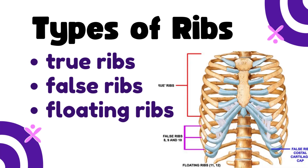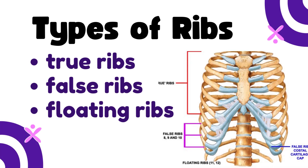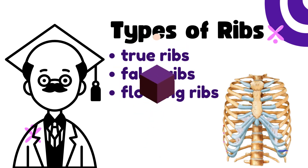Types of ribs: true ribs, false ribs, and floating ribs. Hey everyone, today I'm going to talk about the ribs. We'll break down what ribs are, the different types, and how each type plays its unique role in the rib cage. Let's dive right in.